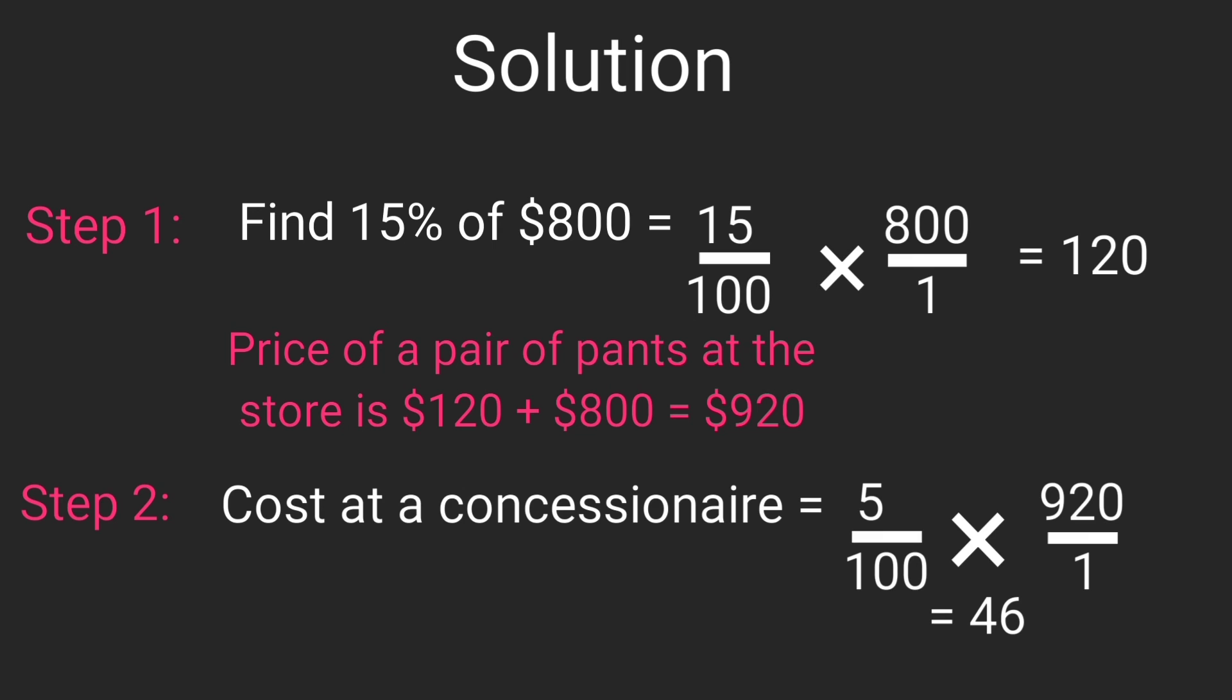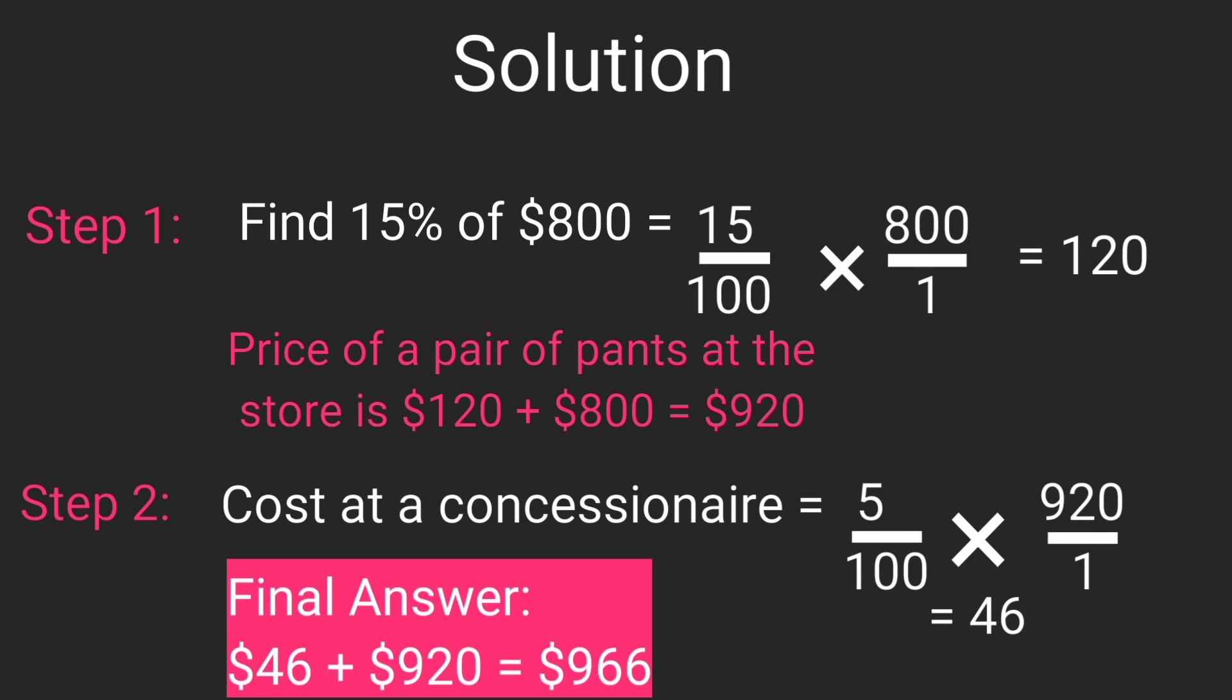So now the cost of a pair of pants will be $46 plus $920. That is what the customer is going to pay at a concessionaire for a pair of pants. So $46 plus $920 gives you $966 as the final answer.